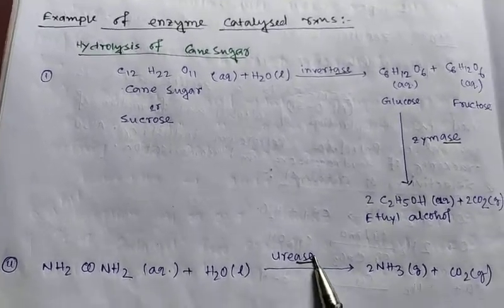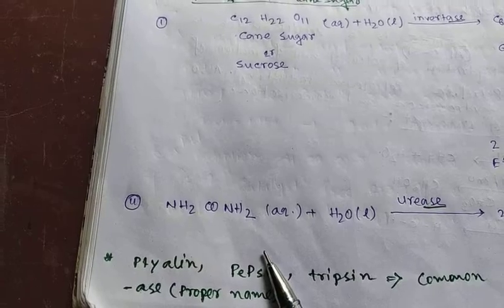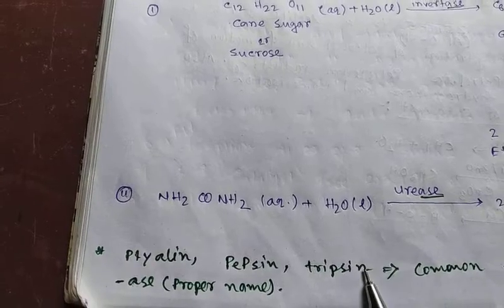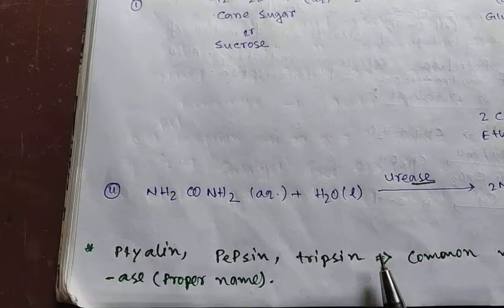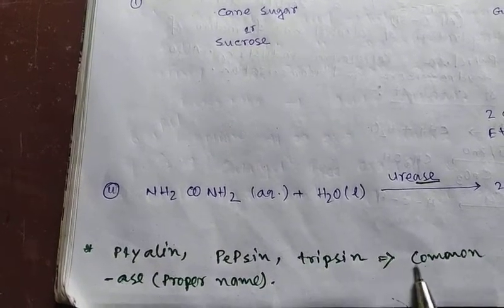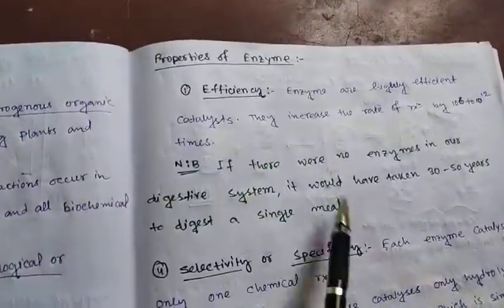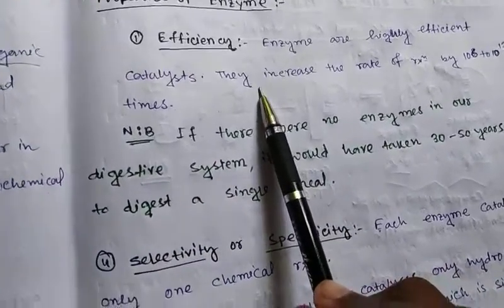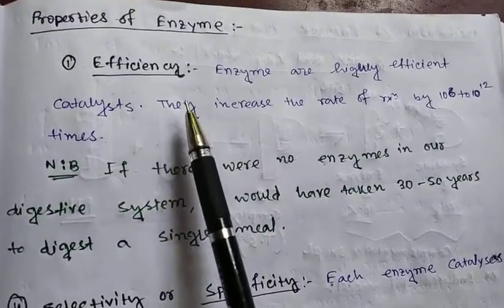Proteolytic enzymes such as Ptyalin, Pepsin, and Trypsin are enzymes that catalyze the breakdown of proteins.